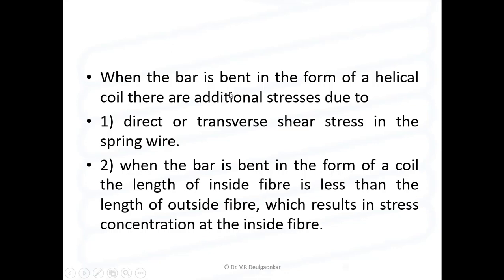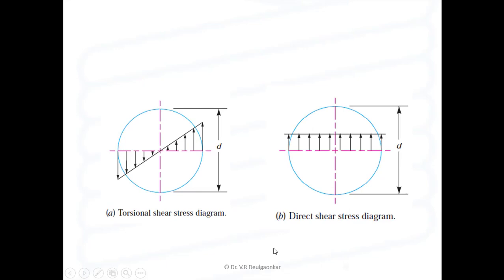When the bar is bent in the form of a helical coil, there will be additional stresses — those are direct or transverse shear stress in the spring wire. We observe that the length of the inside fiber is less than the length of the outside fiber, resulting in more stress concentration at the inside fiber. These are shown in the torsional shear stress diagram and direct shear stress diagram.